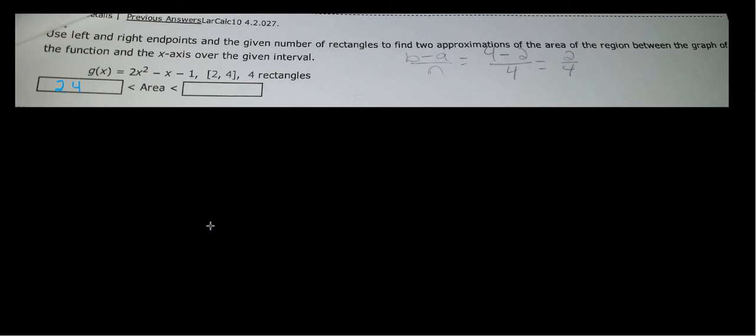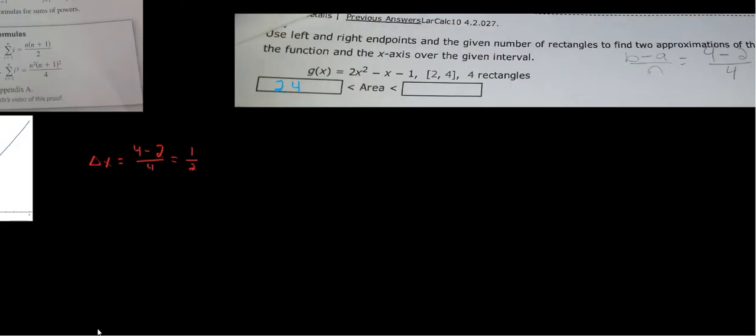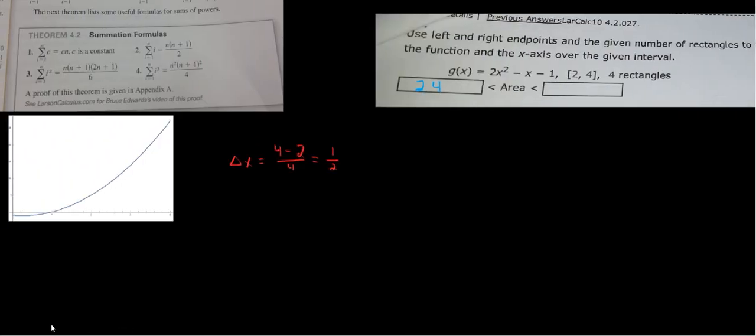All right, so in the previous video we did the left endpoint two different ways. We did it just adding up the rectangles by hand, computing each one of their areas and adding them all up. And then we did it by using the summation formulas, which is very lengthy, but could come in handy when we're dealing with larger value problems or a lot of rectangles.